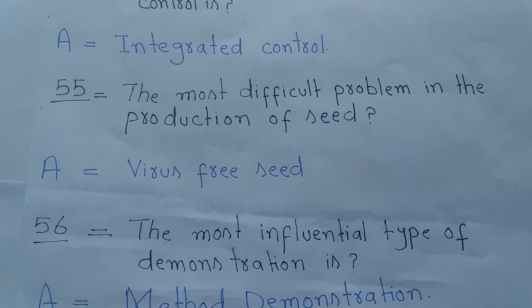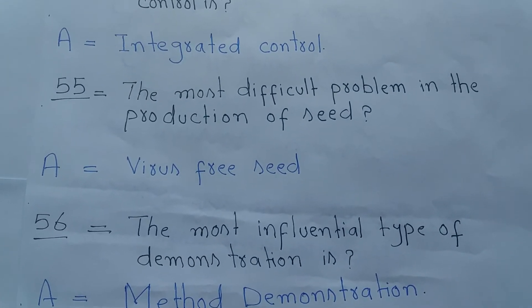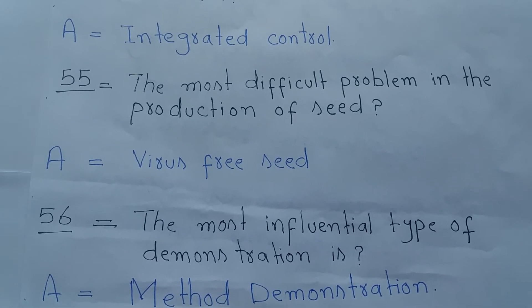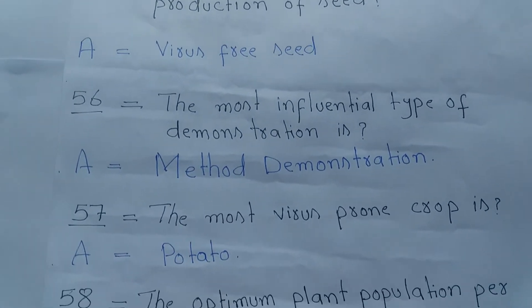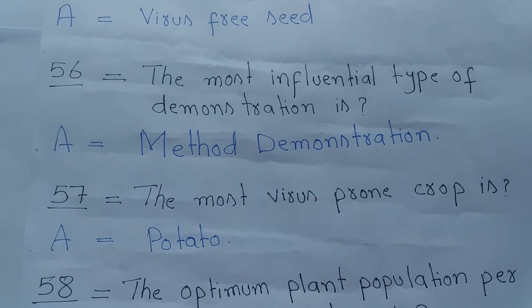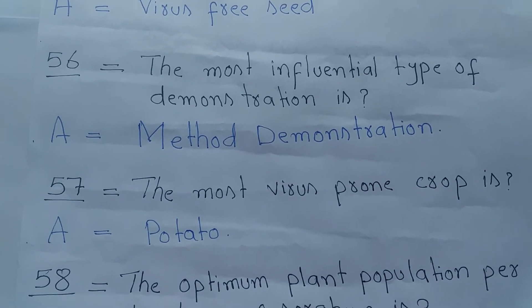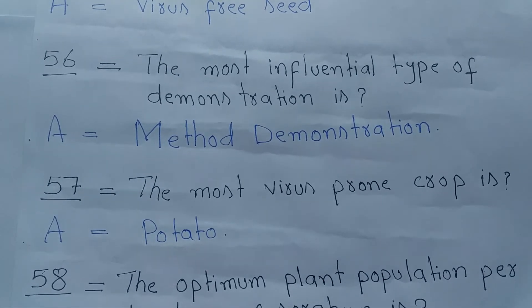Question number 55: The most difficult problem in the production of seed? Answer is Virus-free seed. Question number 56: The most influential type of demonstration is? Answer is Method Demonstration.